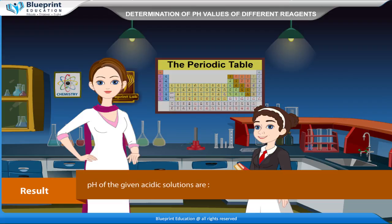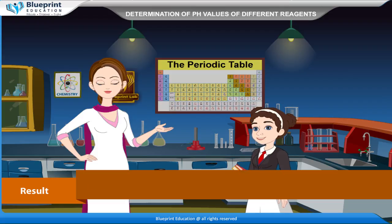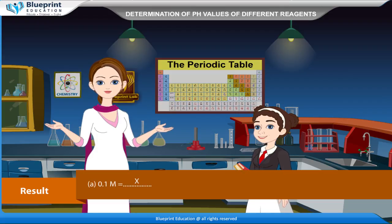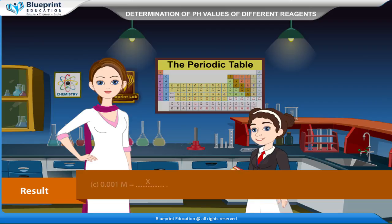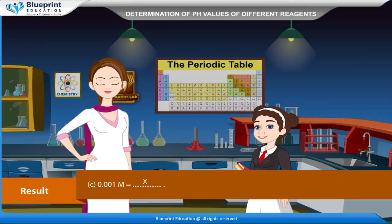Result: The pH of the given acidic solutions are — 0.1 M HCl = X, 0.01 M HCl = X, and 0.001 M HCl = X — to be filled based on experimental observations.